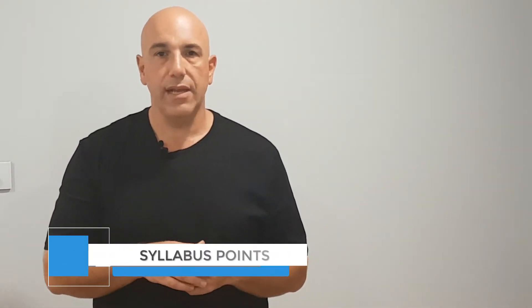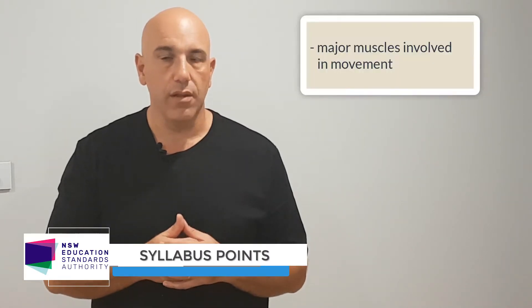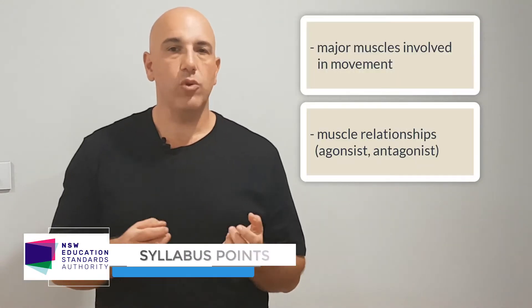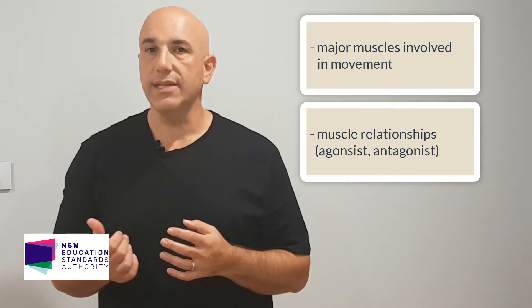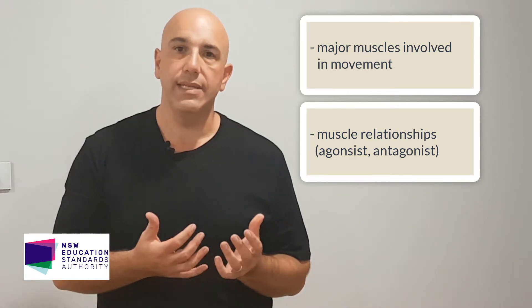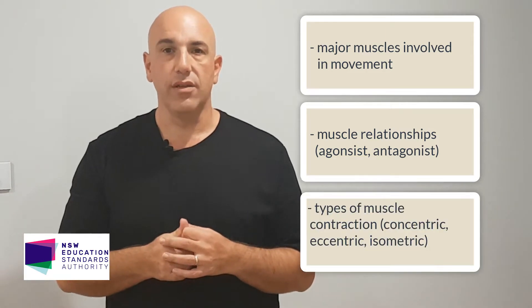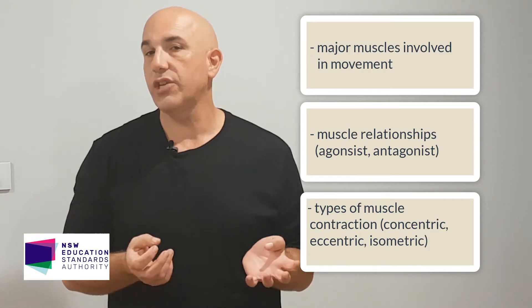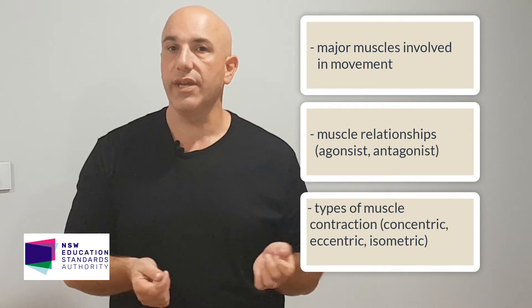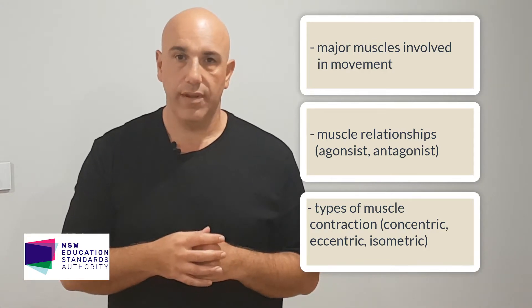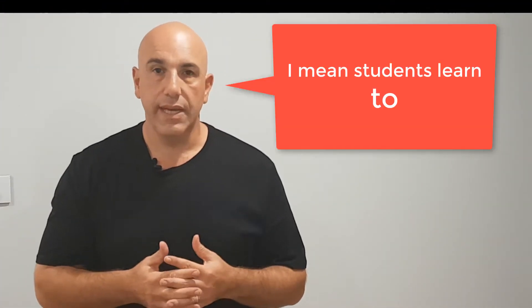Our first dot point is identifying the major muscles and movement. Our second dot point is the muscle relationship — knowing what the agonist and the antagonist is. Our third dot point is the types of contraction: concentric, eccentric, isotonic, and isometric.